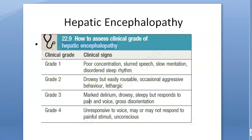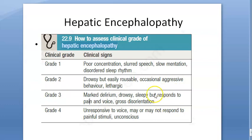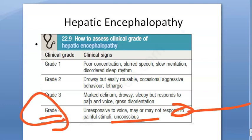Grade 2 is becoming a little more serious: drowsy but easily rousable, occasionally aggressive behavior, lethargic. Grade 3: marked delirium, drowsy and sleepy but responds to pain and voice, with gross disorientation. Grade 4 is unconscious — unresponsive to voice and may not respond even to painful stimuli. This is the clinical grading of hepatic encephalopathy.